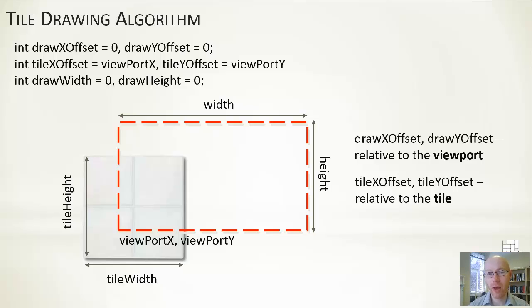drawWidth and drawHeight are variables we will calculate that tell us how much for the current instance of drawing the tile we can draw along the X and along the Y axis. These determine how much we draw to make sure that we're populating it but we're not stepping outside of the bounds of the viewport.